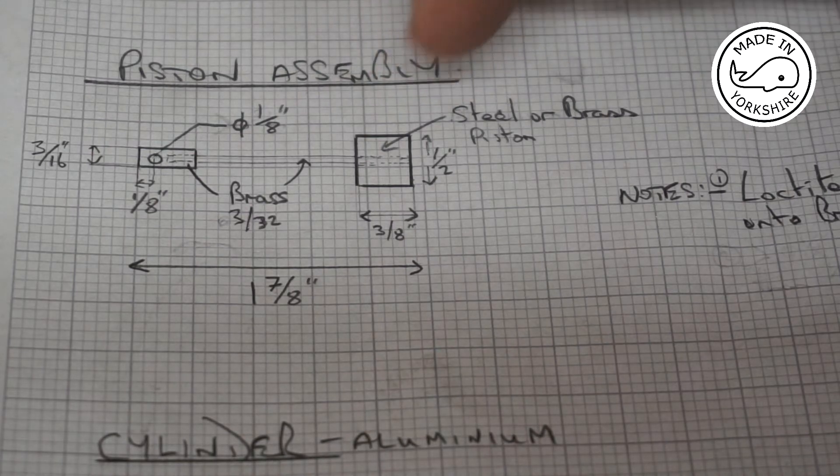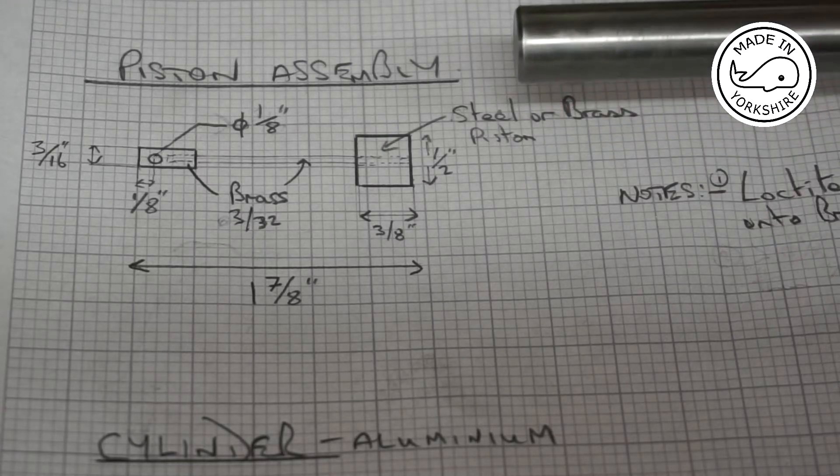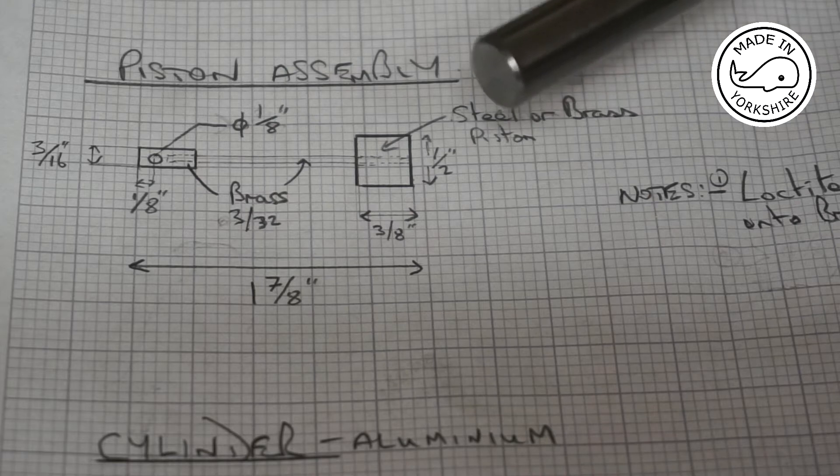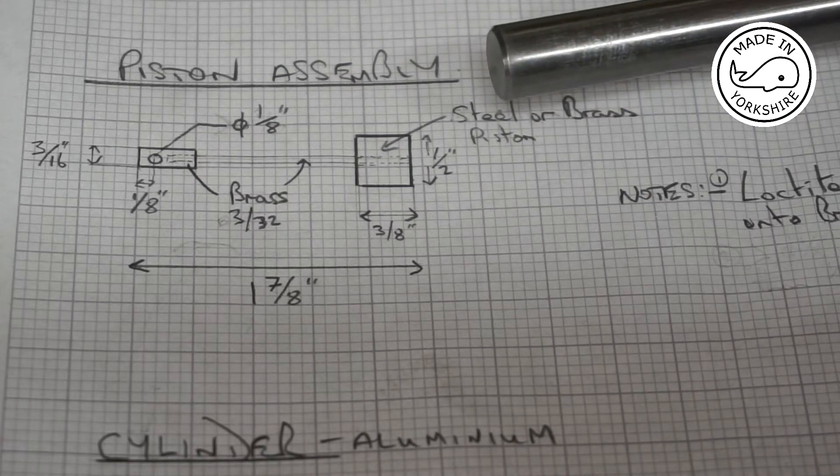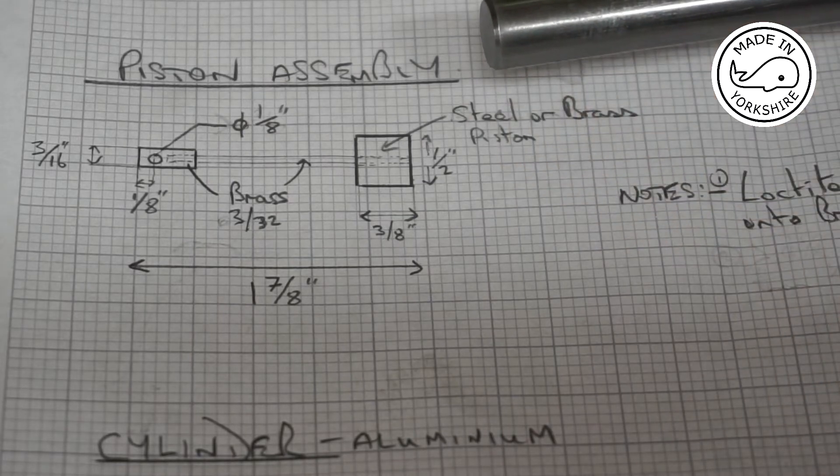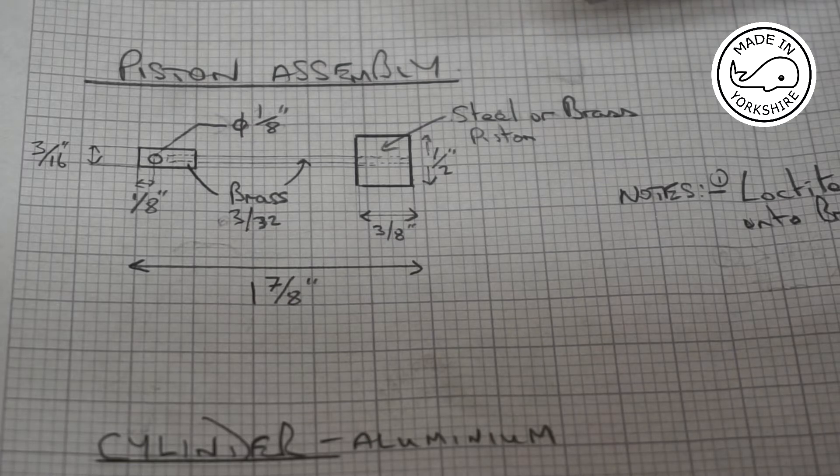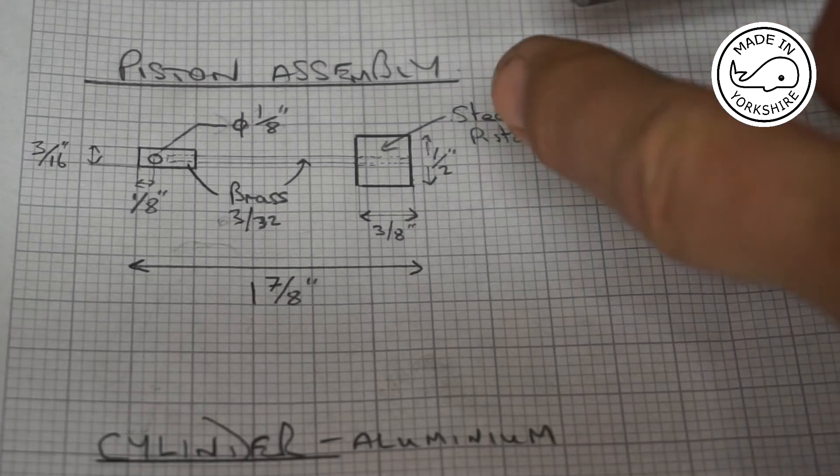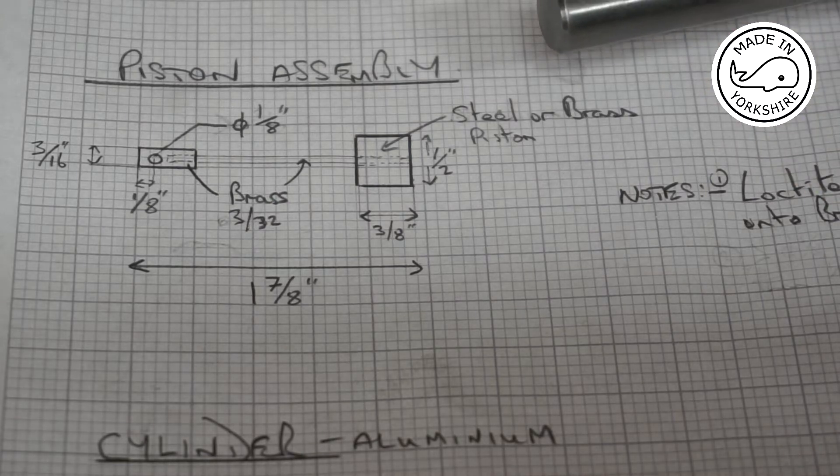The piston can be either steel or brass and I think it must be my lucky day because I've just found this piece of steel bar which is exactly half an inch in diameter. All I need to do is center drill it, drill the hole through the center, and then part it off at three-eighths of an inch. So we'll see how we get on.